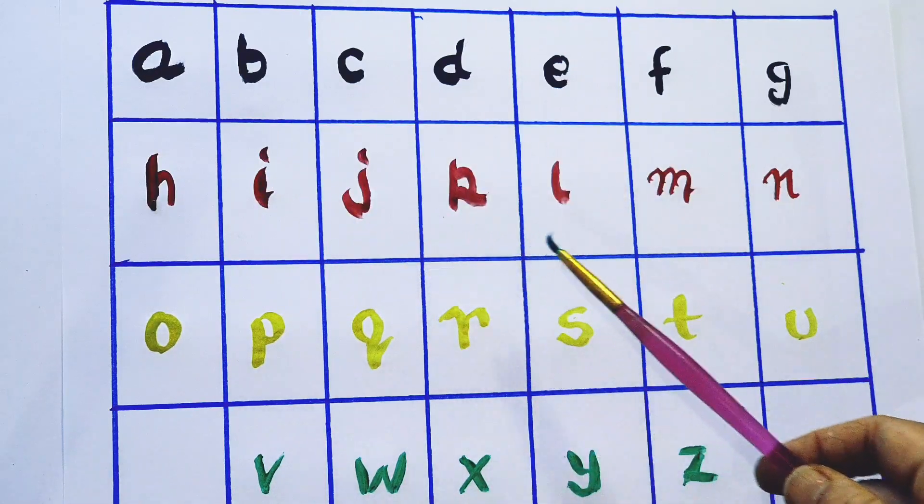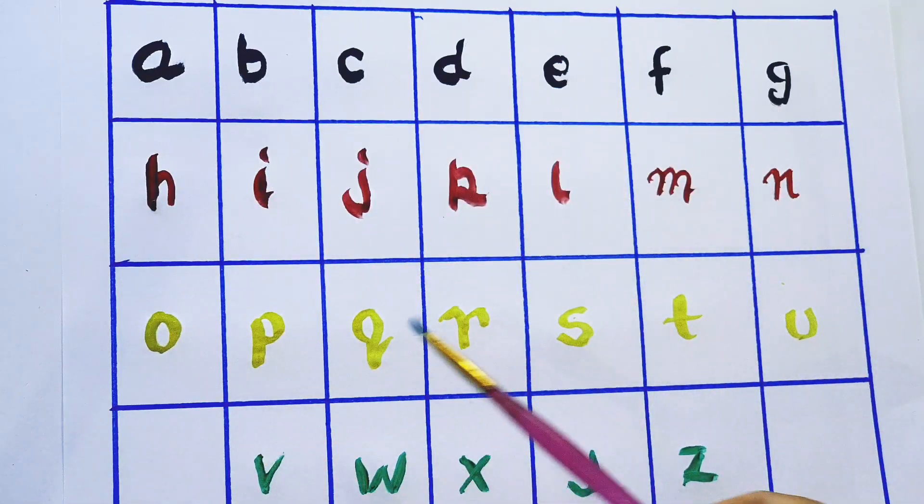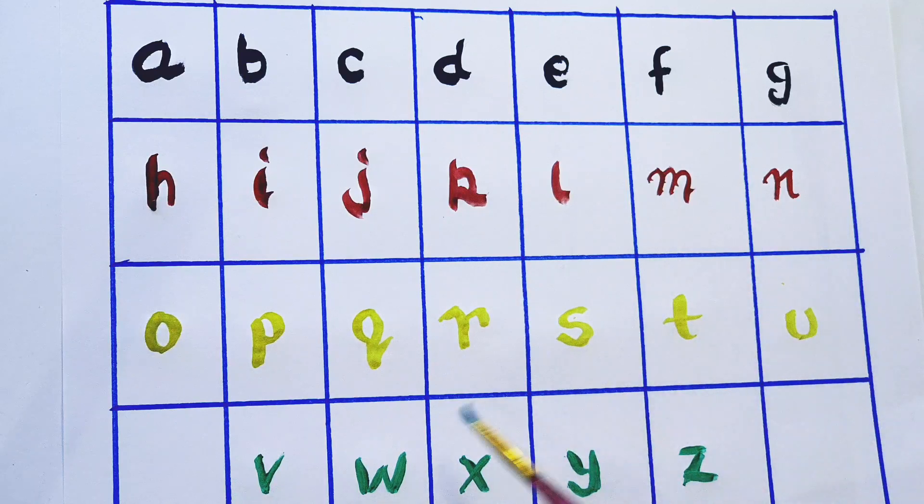A, B, C, D, E, F, G, H, I, J, K, L, M, N, O, P, Q, R, S, T, U, V, W, X, Y, and Z. Now I know my A, B, C.